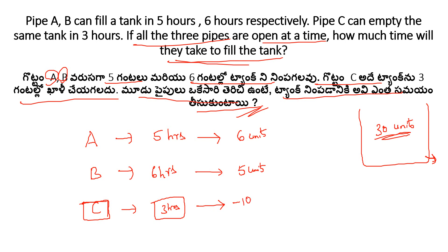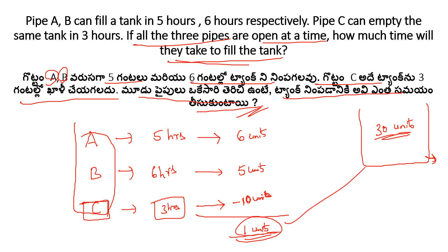Per unit time: A fills 6 units, B fills 5 units, C empties 10 units. Net per minute is 6 plus 5 minus 10 equals 1 unit. So the tank fills in 30 units divided by 1 unit per hour — these are easy questions to practice. This model is repeated in every shift of the exam.